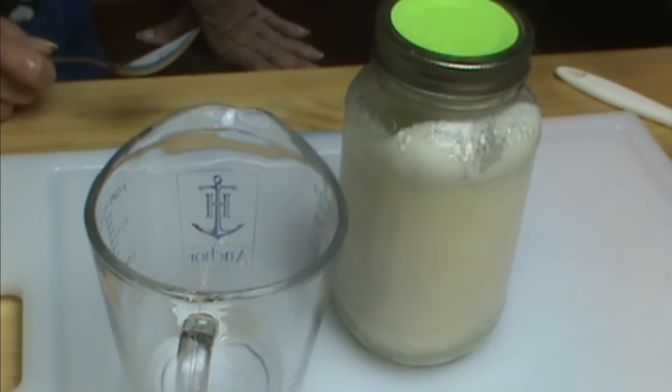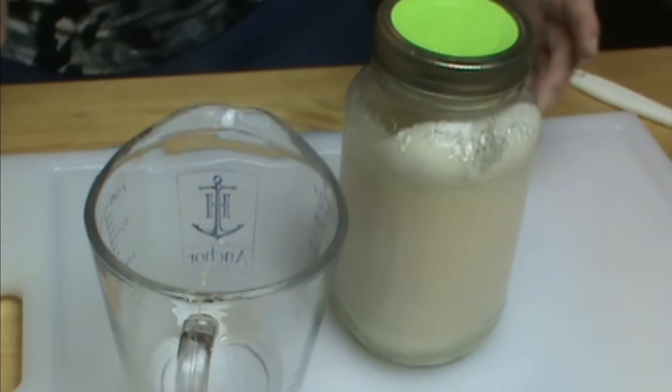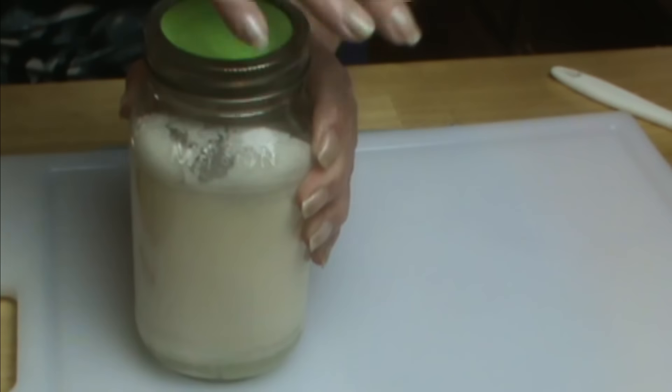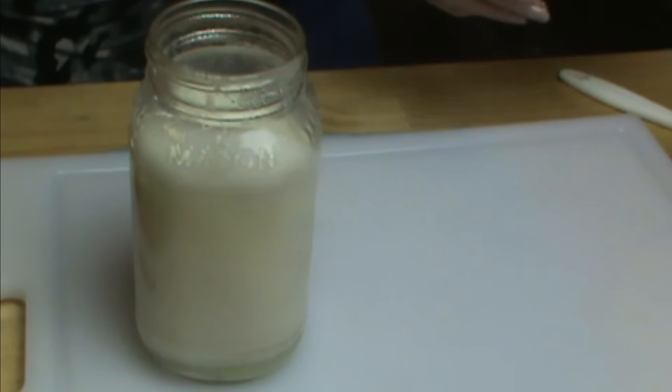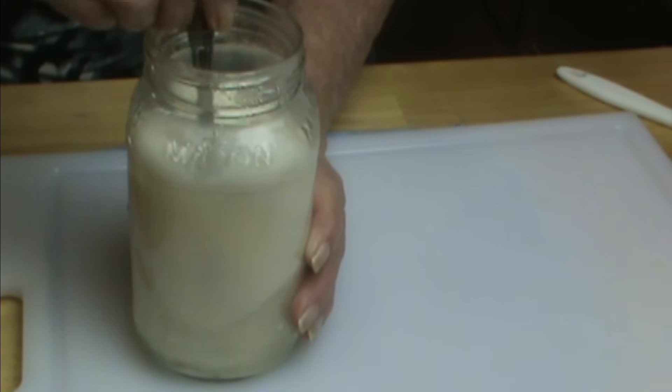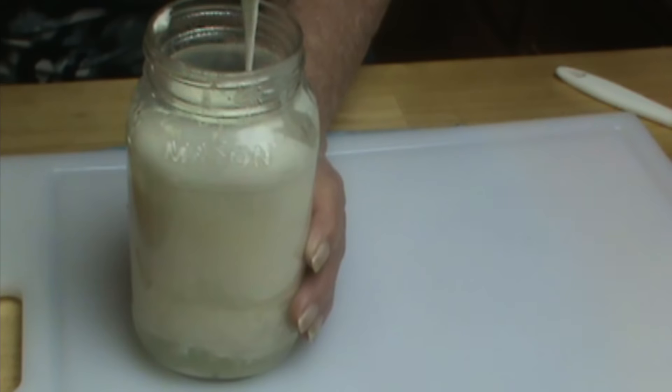I actually put mine in my roaster oven on about 100 degrees for the last three or four hours. Somewhere between 8 and 24 hours, it's gonna turn into creme fraiche. And you can see it's thickened up nicely.